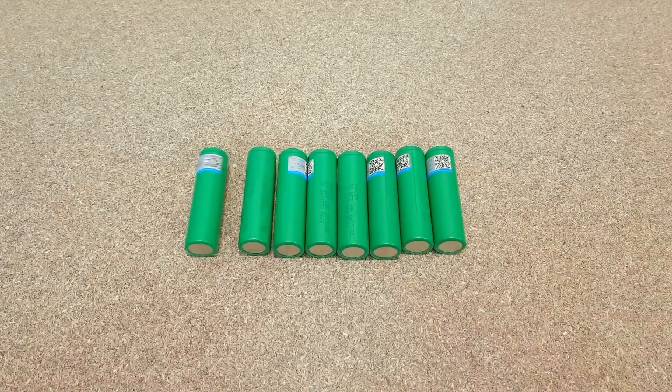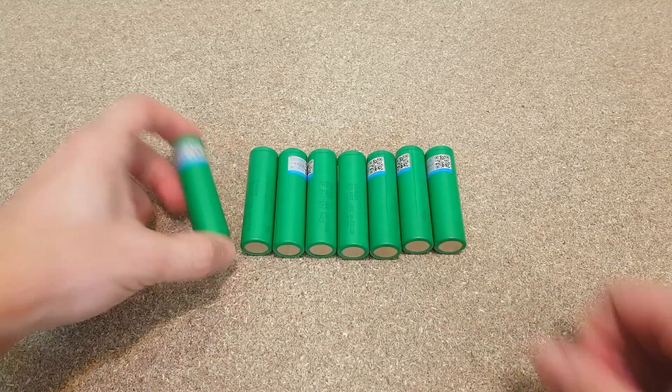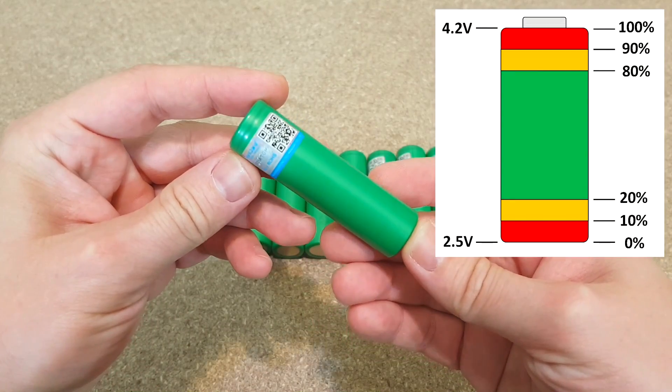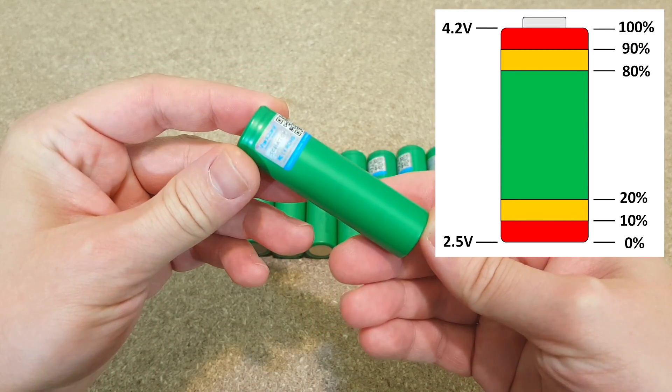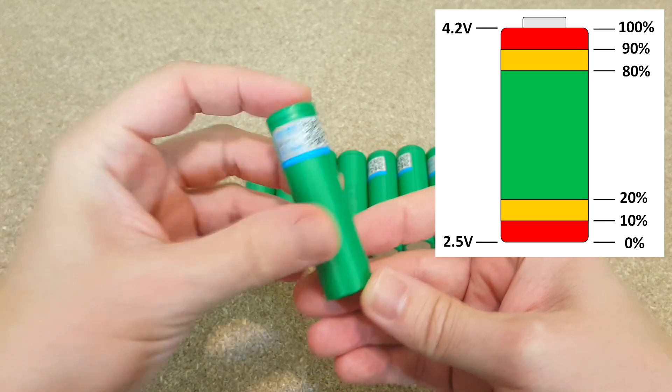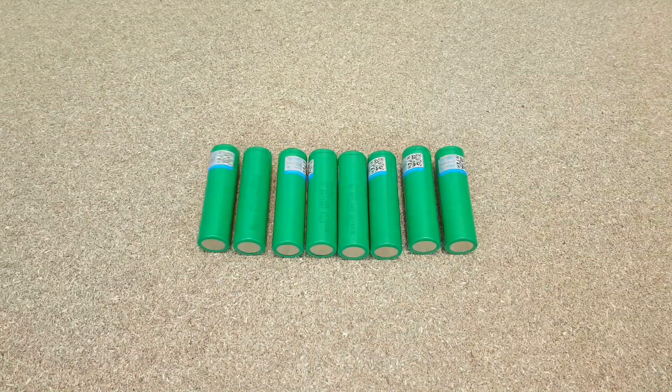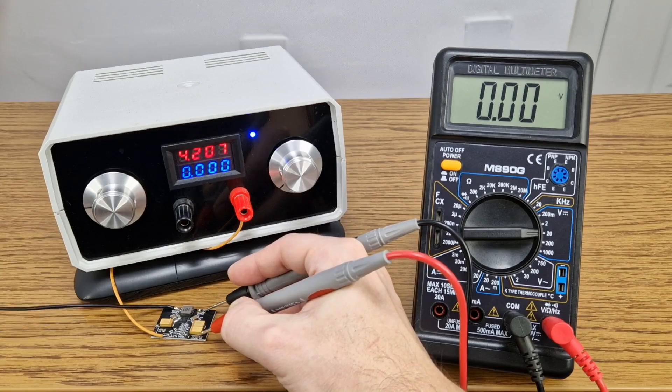But a lithium ion cell doesn't deliver a stable voltage. It has between 4.2 volts when fully charged and minimum around 2.5 volts depending on the protection circuit. That's why this buck boost converter is so good.